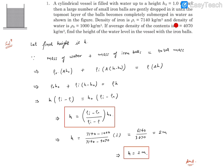The density of iron and water are given. If the average density of the content is known, find the height of the water level in the vessel with the iron balls.